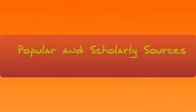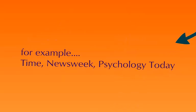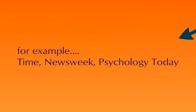Then popular and scholarly sources — you need to know the difference between those two as well. Popular sources are written for general audiences. Things are less technical; the language is not as technical and the explanations are more written for general readers. A newspaper is a popular source. Things like Time Magazine, Newsweek, Psychology Today — these are popular sources meant to be accessible to many, many people, whether or not you know anything about a topic.